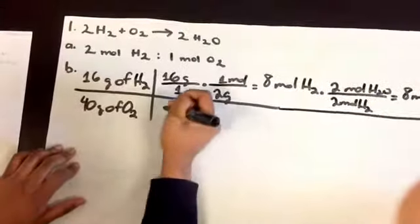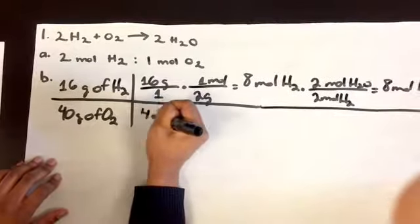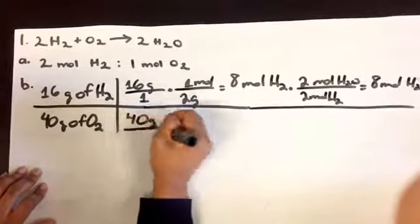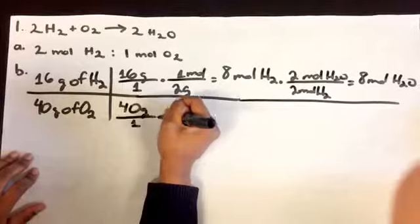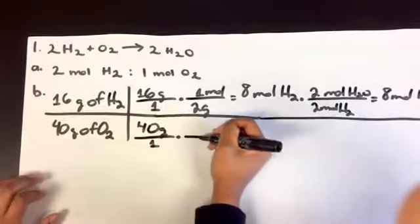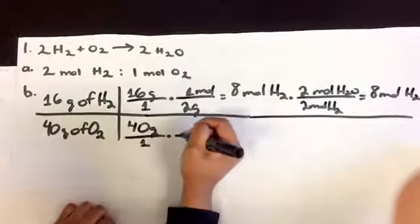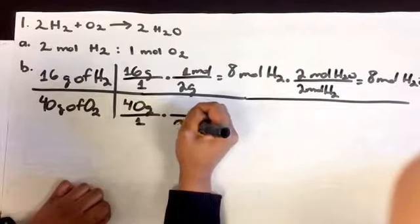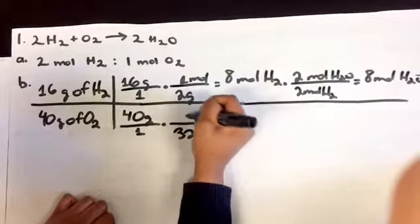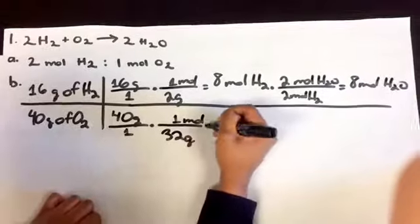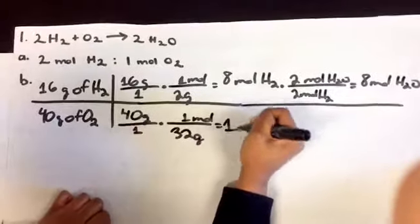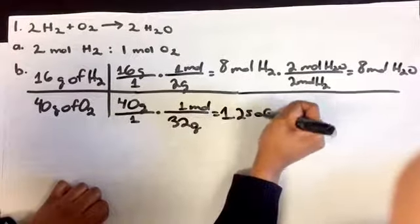Now with 40 grams of oxygen, you would do the same thing. You can have 40 grams of oxygen over 1 times the molar mass of O2, which is 32 grams, and you would get 1.25 moles of O2.